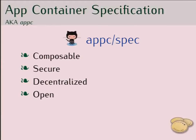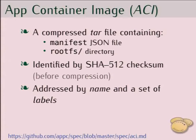The App Container spec is an open specification, and it's important to know that Rocket is implemented specification-first: first they write documentation, then schema code, then supporting code, and only then implement it in Rocket. The spec is actually neutral — it's not Linux-specific. The base part, the first part, is the App Container Image, which is specified as a tarball. It contains a JSON manifest and a rootfs directory with files, and is identified by a simple checksum.